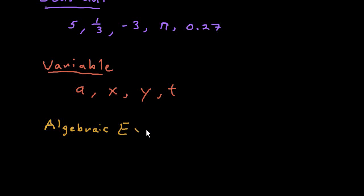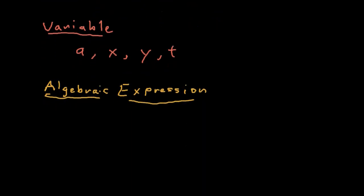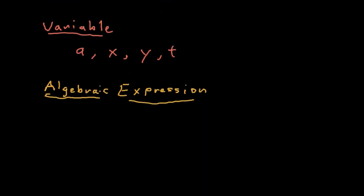Okay, the first example is just a single variable, X. That is an algebraic expression. We can make it more complicated. Two X plus five. That's another algebraic expression.